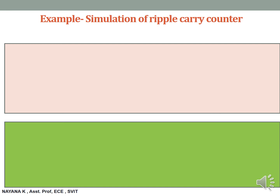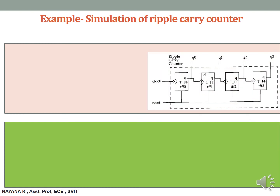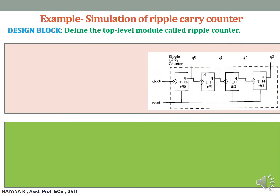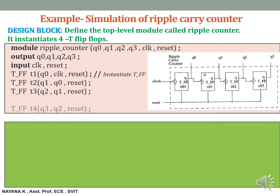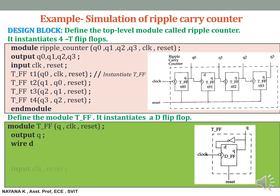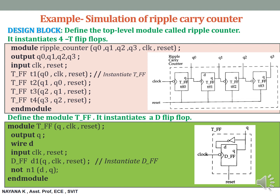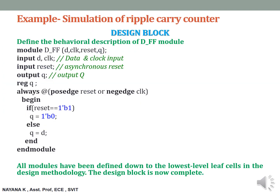To understand what is a design block and a stimulus block, we take the example of a ripple carry counter. First is the design block where we define the top level module, called the ripple counter, which instantiates four T flip flops. We have understood how this code is written and how instantiation is done. This design block instantiates another sub block or sub module. This T flip flop is instantiating another D flip flop, which also comes as part of the design block. This is the behavioral description of the D flip flop. We are not getting into the details of the constructs because each will be understood in further modules. So till here we have defined the ripple carry counter using three programs — that is the design block — with all modules defined from the top level to the lowest level leaf cells.